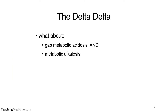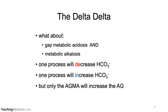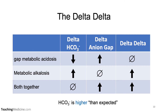What about the combination of an anion gap metabolic acidosis and a metabolic alkalosis? One process will decrease the bicarb while the other will increase the bicarb, but only the anion gap metabolic acidosis will increase the anion gap. With metabolic alkalosis, the bicarb goes up with no change to the anion gap. Putting both together, the changes in bicarb balance each other out, so you could actually have a normal bicarb but a persistent anion gap, and the delta-delta will be increased — the bicarb is going to be higher than you would expect given the anion gap present.